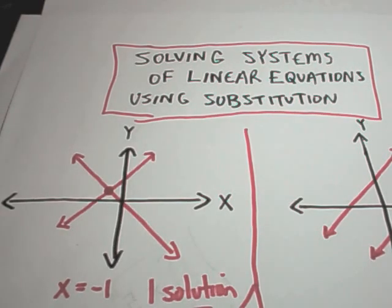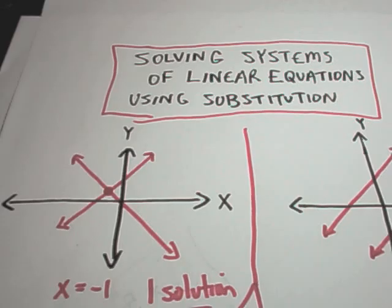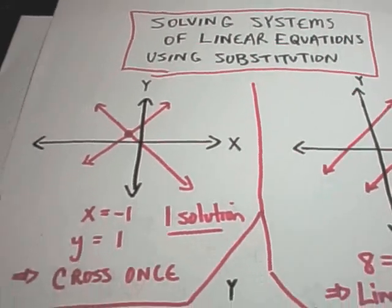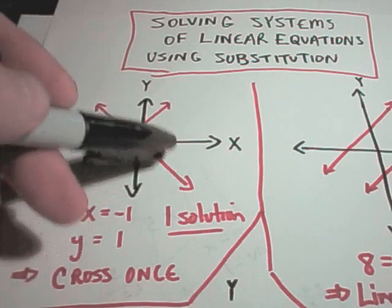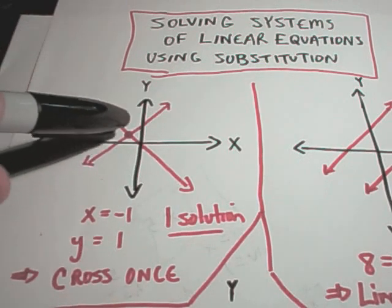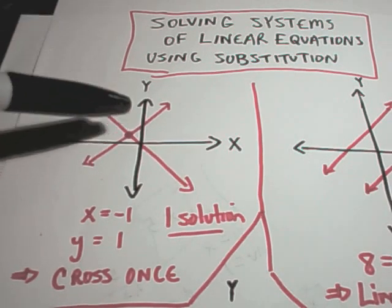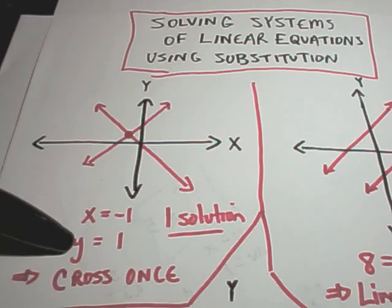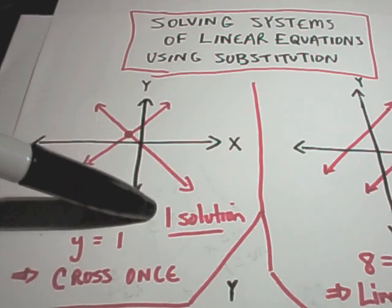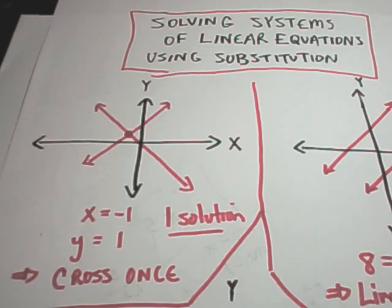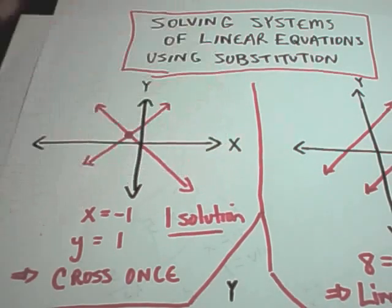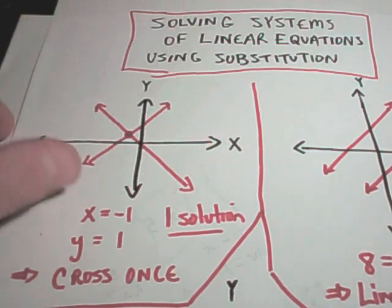There are kind of three possibilities when you solve these. One thing that can happen graphically is your lines will cross in one place, and that means you have exactly one solution. Algebraically, you'll be able to solve for x and get some number for x and some number for y, and that'll imply that you have exactly one solution. So if you get x equals something, y equals something, that means they're crossing in one place.